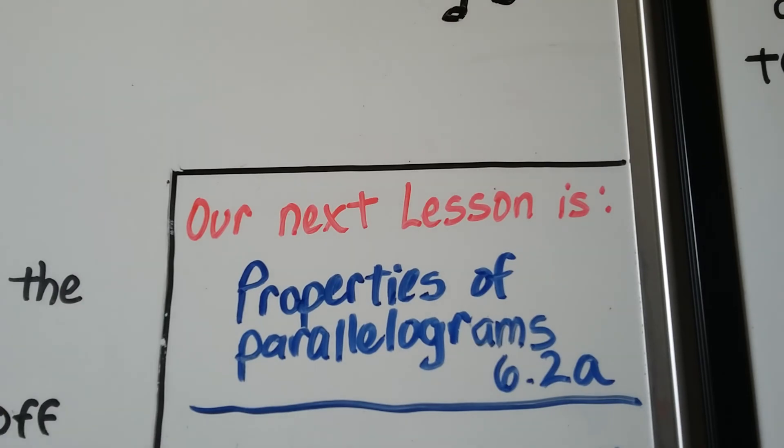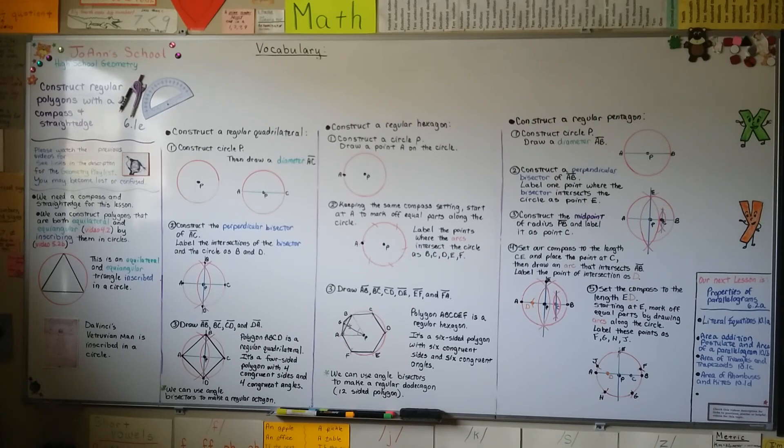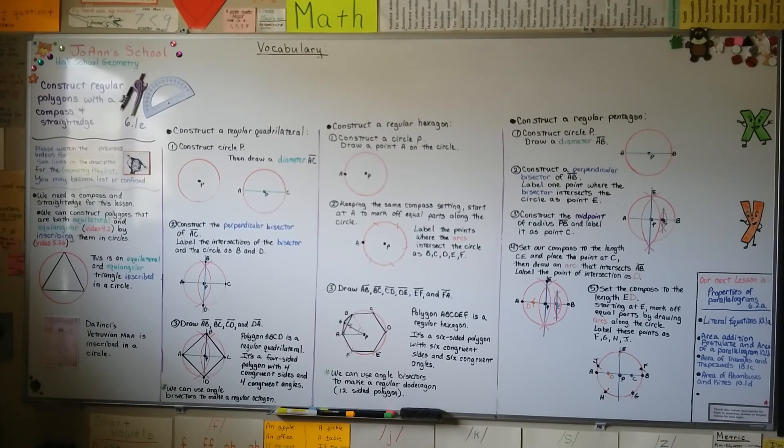Our next lesson is properties of parallelograms 6.2a. So now you know how to make a regular quadrilateral and turn that into a regular octagon, how to make a regular hexagon and turn that into a regular dodecagon, and how to make a regular pentagon and turn that into a regular decagon. I hope this video was helpful. Hit the like button if it was, and I'll see you next time. Bye!